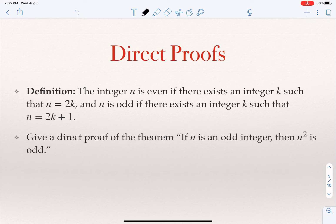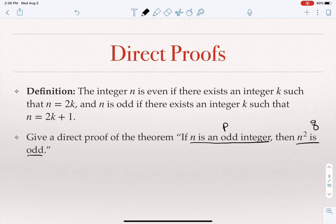Let's see an example of a simple result we can establish using direct proof. As a reminder, an integer is even if you can write it as two times another integer, and it's odd if you cannot — basically the number is of the form 2m + 1. Suppose someone gives us this claim: prove that if n is an odd integer, then n squared is odd. So p is 'n is an odd integer' and q is 'n squared is odd.'